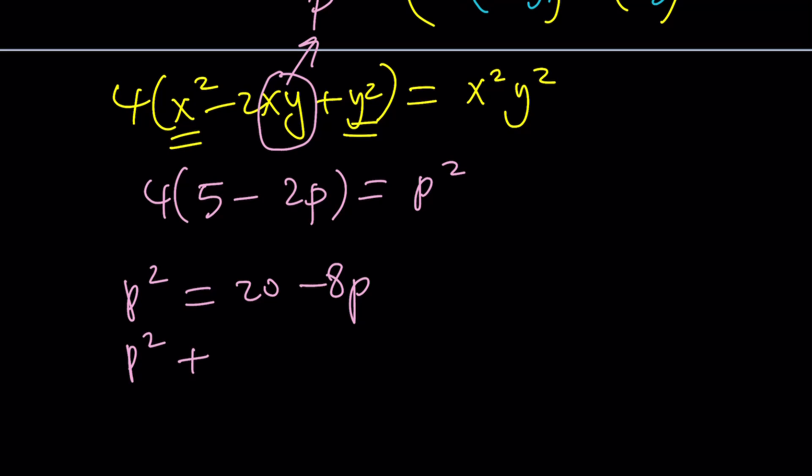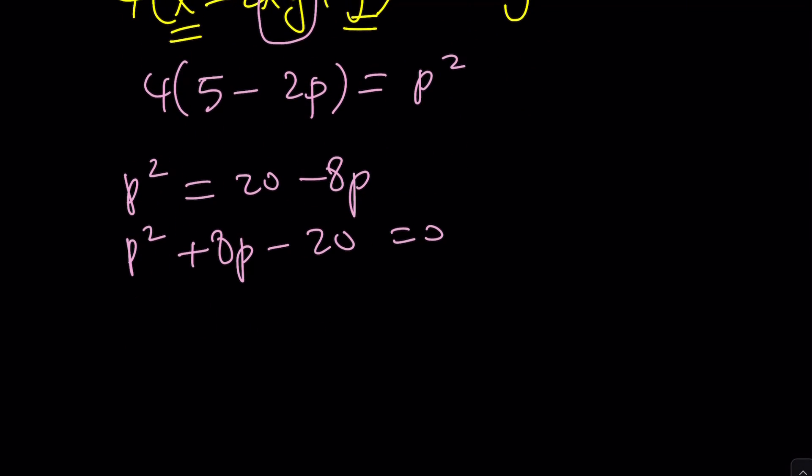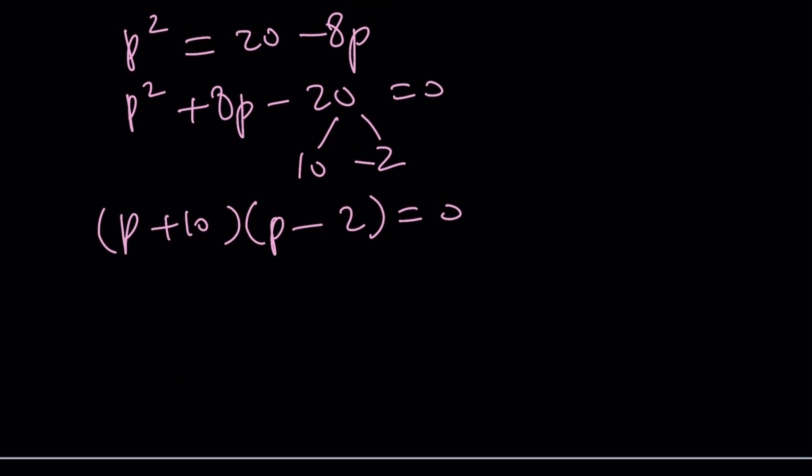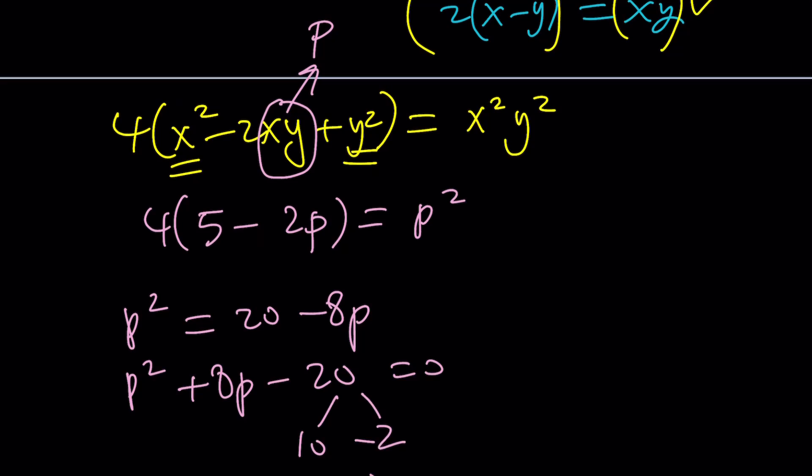And this gives us p² + 8p - 20 = 0. And from here, I think we get 10 and 2, and one of them needs to be negative. So, (p+10)(p-2) will do the trick. And from here, we get p = -10 and p = 2. Let's just take a look at one of them. The other one is very similar.